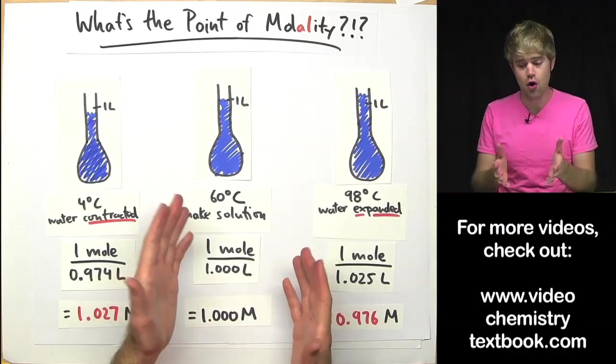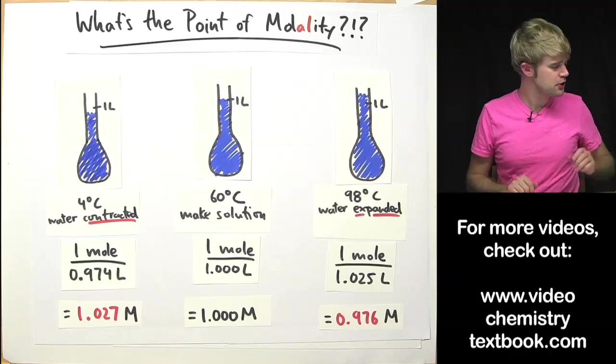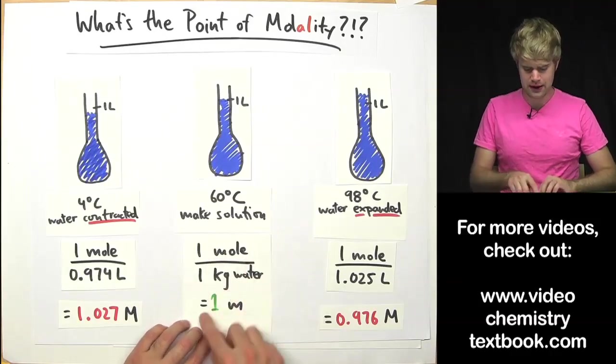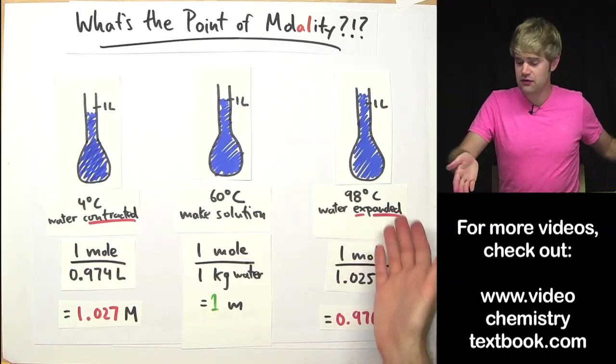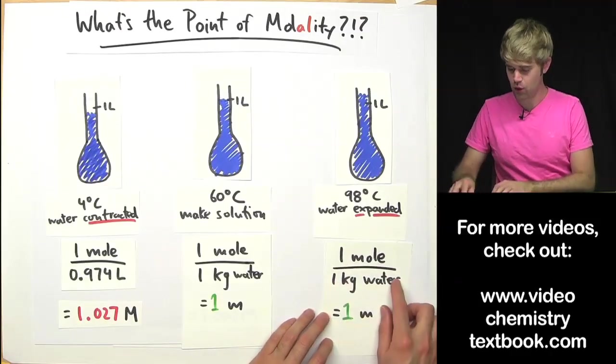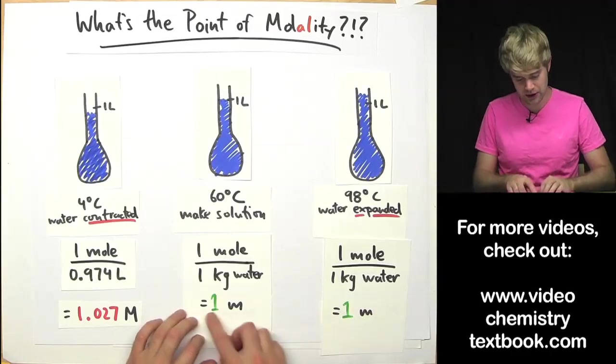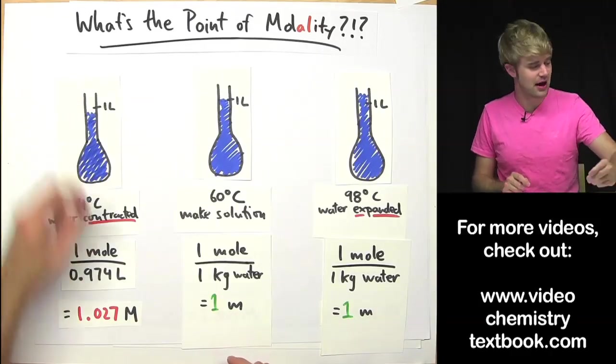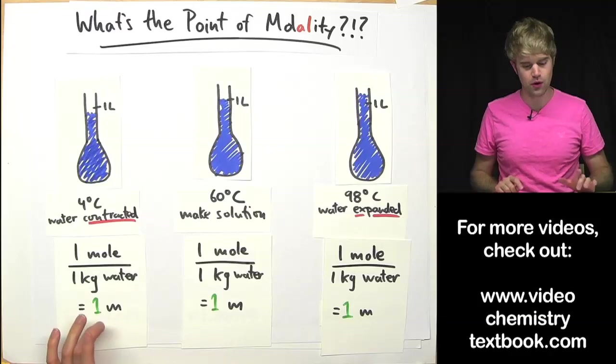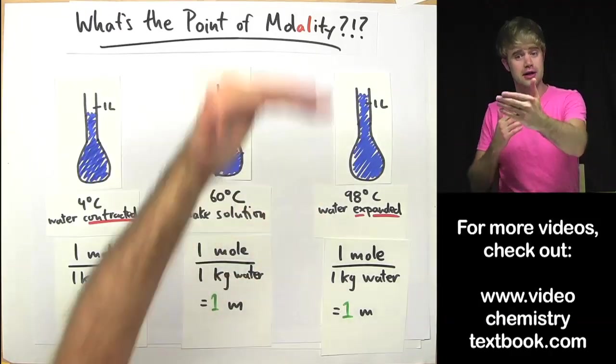On the other hand, while water can contract and expand, its mass will never change. So that means that if you have one mol in one kilogram of water at 60 degrees, even if that water expands, it will still weigh one kilogram. So I will have one mol over one kilogram of water at 98 degrees. So I also have one molal solution here, like I had a one molal solution here. And again, if that water contracts a little bit, it's no big deal because the mass is still one kilogram. So I get a one molal solution. So it's constant no matter how the solution might expand or contract.